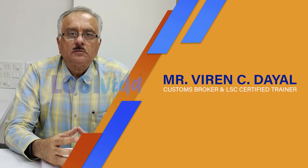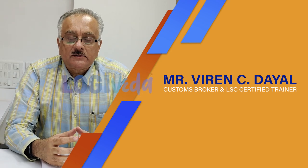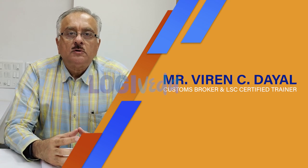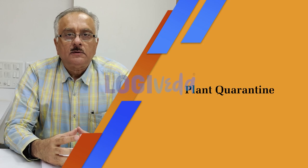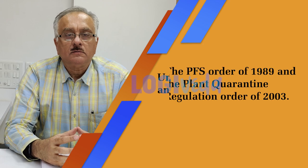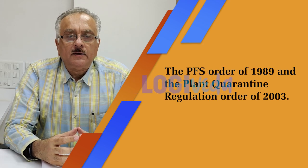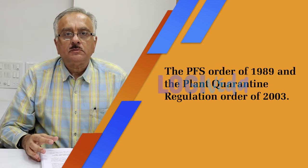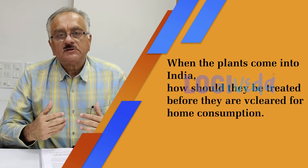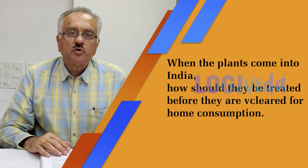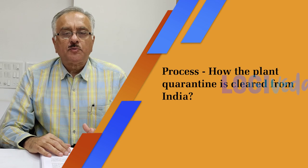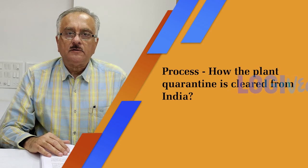After having talked about the regulatory aspects of animal quarantine, the next topic which naturally follows will be plant quarantine — that is under the Destructive Insects and Pest Act 1914, the PFS Order of 1989, and the Plant Quarantine Regulation Order of 2003. All these govern how plants coming into India should be treated before they are cleared for home consumption. Let us now begin with the process of how plant quarantine is cleared in India.